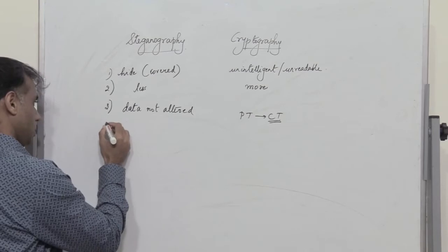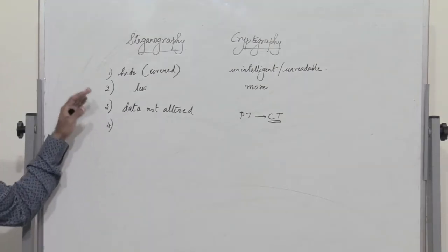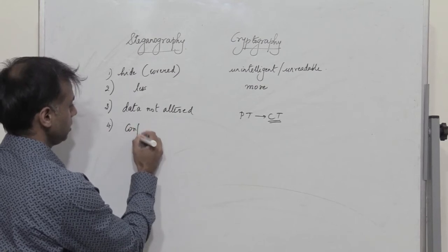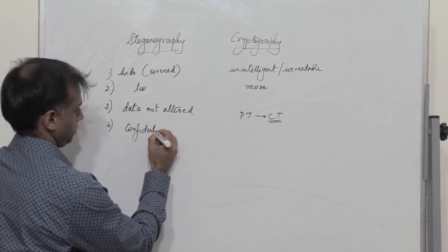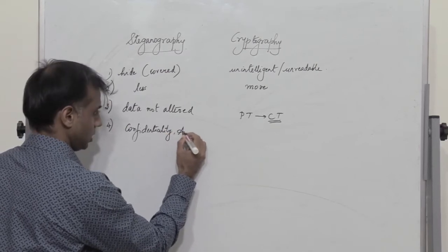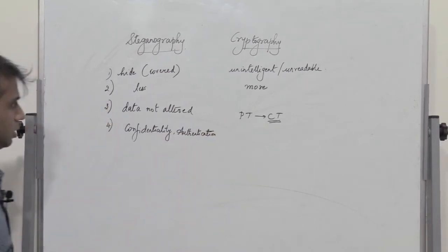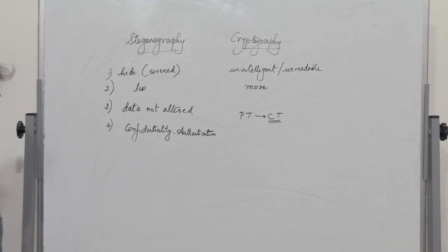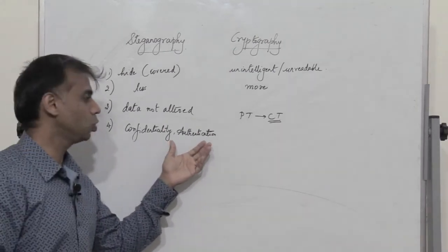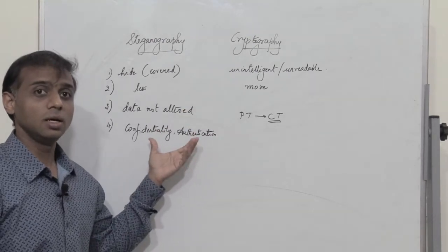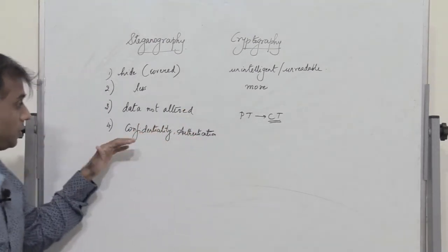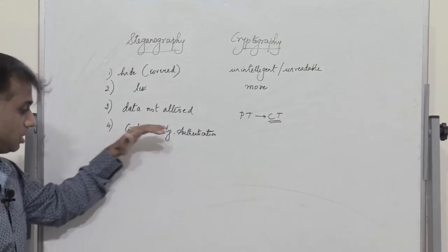A steganographic procedure can provide both confidentiality and authentication. Since the data is covered, the data remains confidential, and we also know from whom the data is coming. So in steganography we can have both confidentiality and authentication.